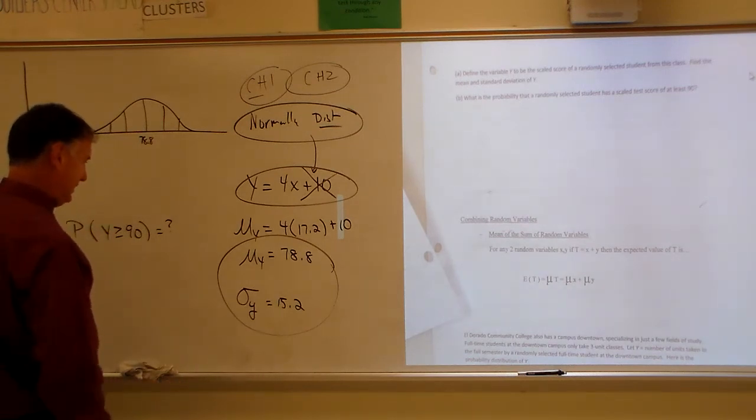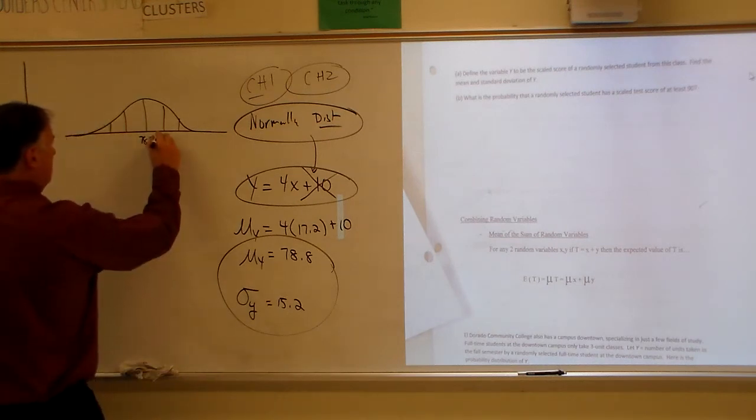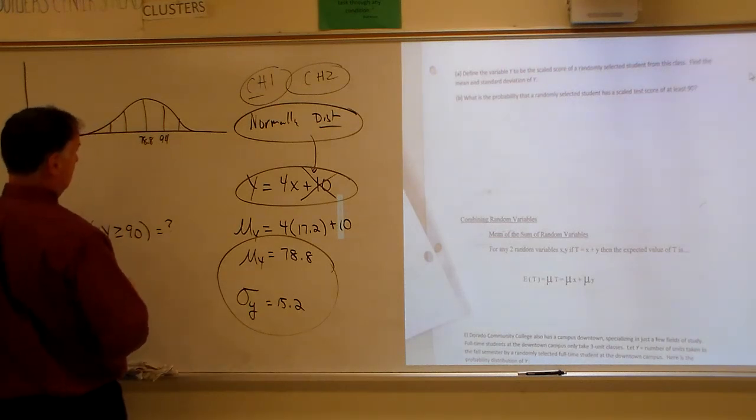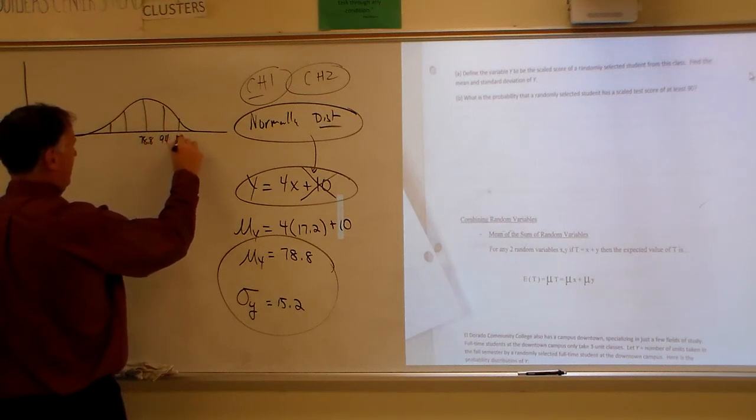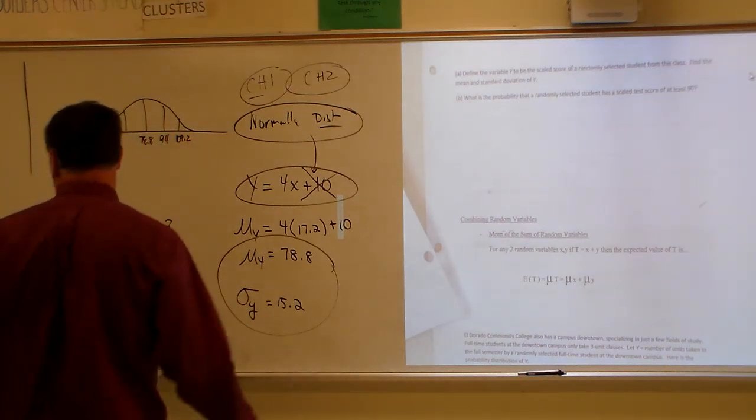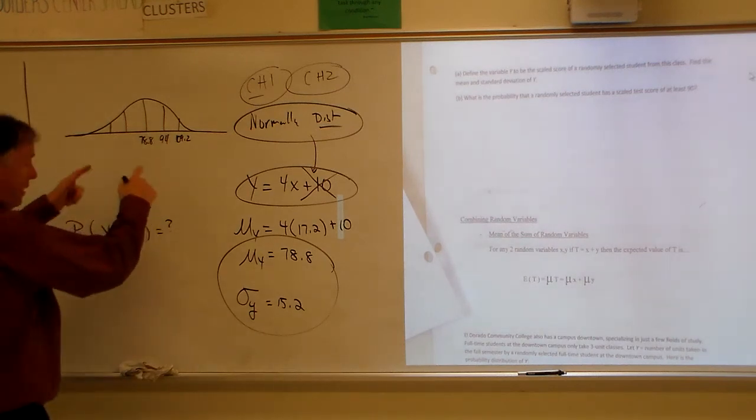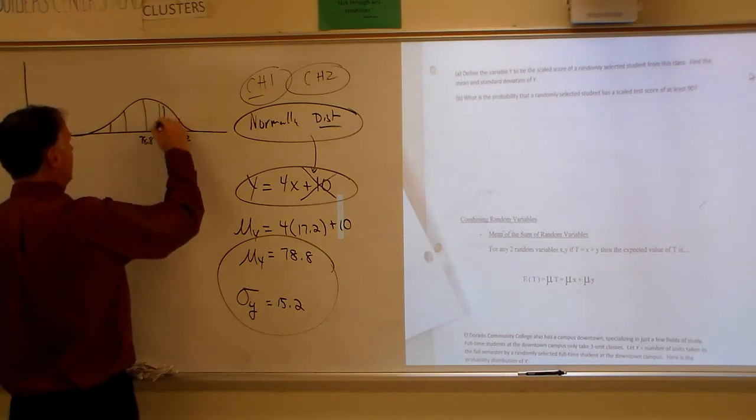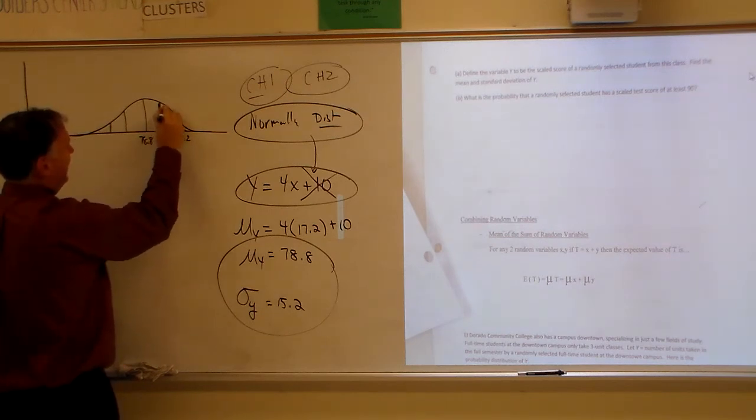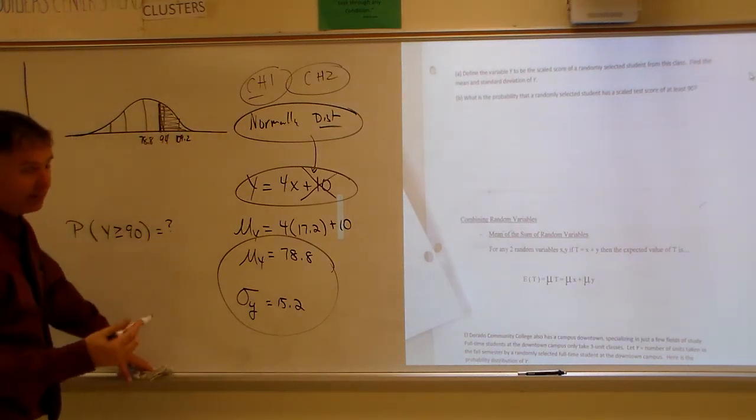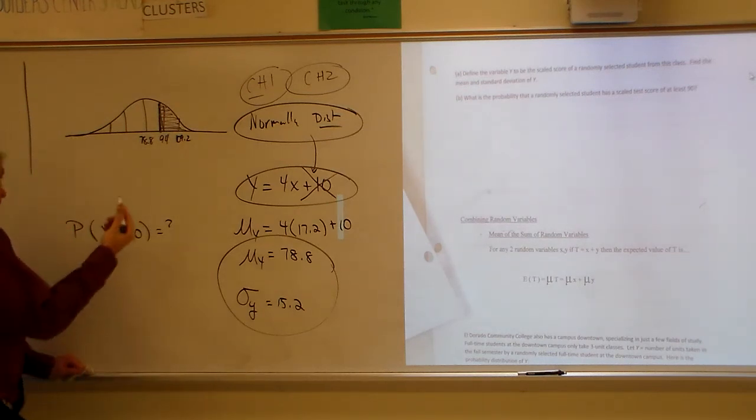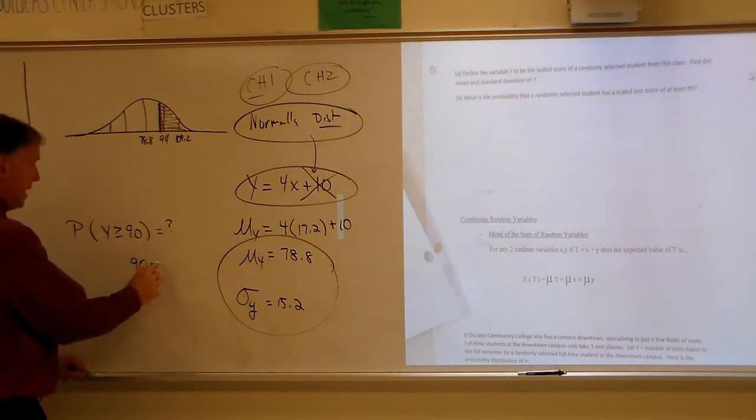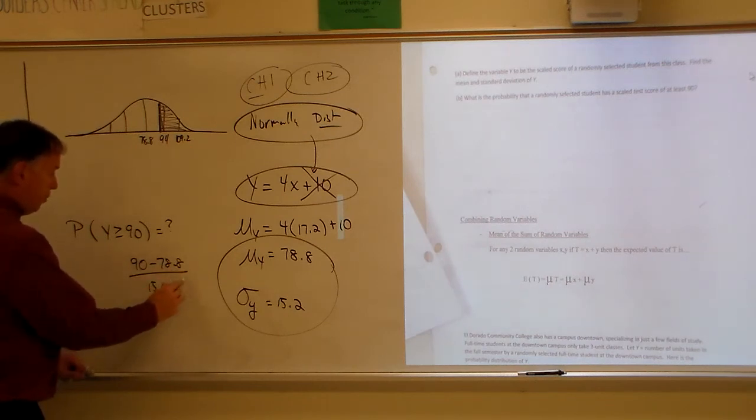And then I add 15.2 to that. And what's that going to do? I think I did this on a video already. It's a repeat. Sorry. I actually filmed part two before part one. So let's find a z-score for that. Find a z-score for 90. 90 minus 78.8 divided by 15.2. Yeah, I definitely did this.